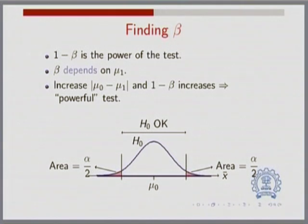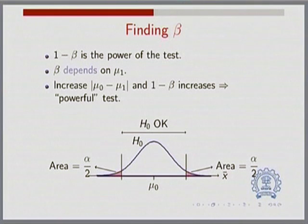What we want is a good diagnostic kit — what we want is a powerful test. If I have a powerful test, that means I want to make very few errors of both types. I want a small alpha and I want a small beta, and that gives me a very powerful hypothesis testing procedure. So, having already fixed alpha, you want to make sure you have a small beta, and that boils down to making sure mu0 and mu1 are far apart.